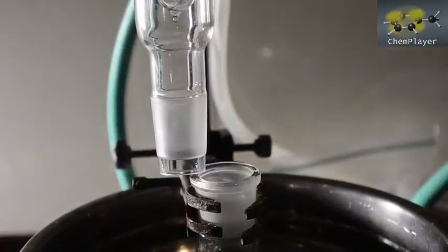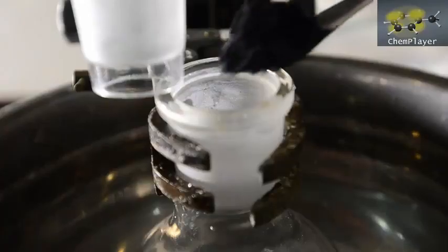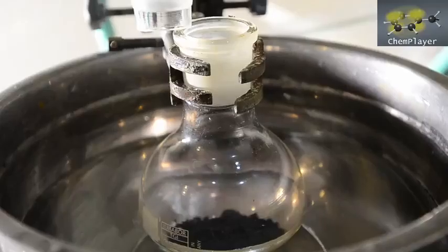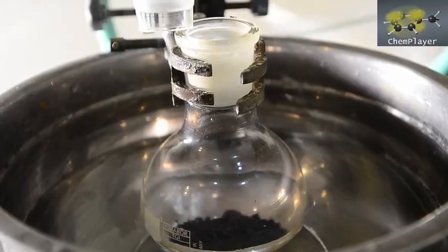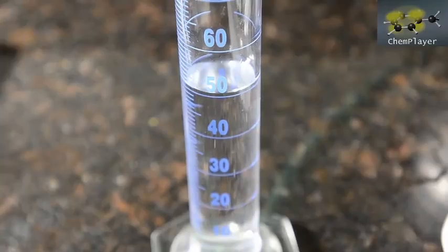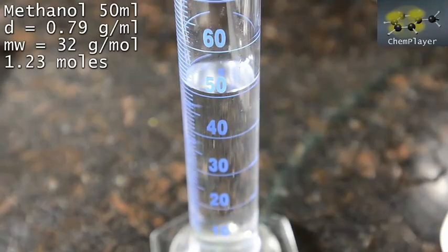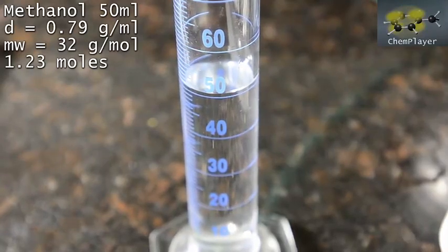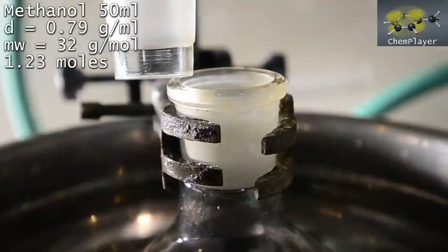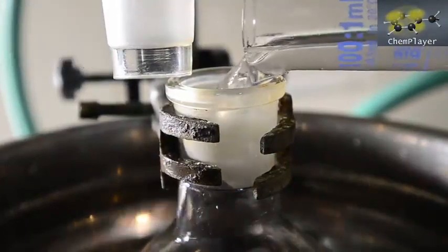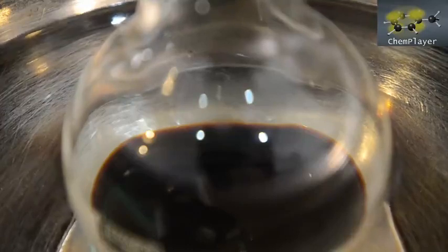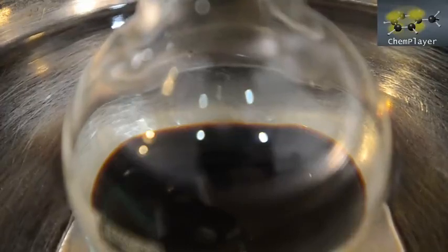Let's first add all the solid iodine to the flask. Here we go, all in now. And now for our methanol. In theory the reaction only requires about 13 ml of alcohol stoichiometrically, but we're going to use 50 ml. The reason being that we want there to be some liquid in here which can boil and stop the iodine and aluminum reaction getting out of control. Some of the iodine dissolves in the methanol forming a red-brown colored solution as you can see.